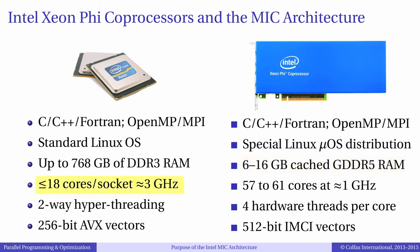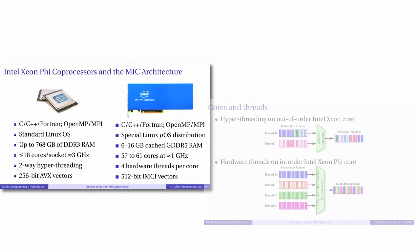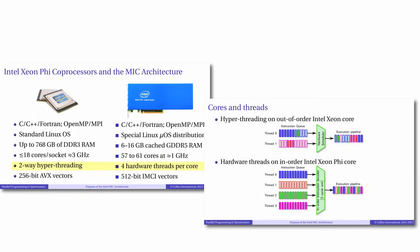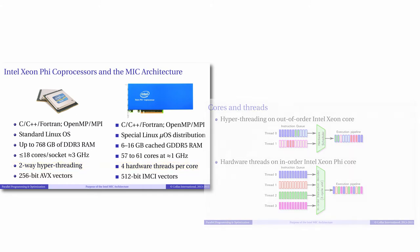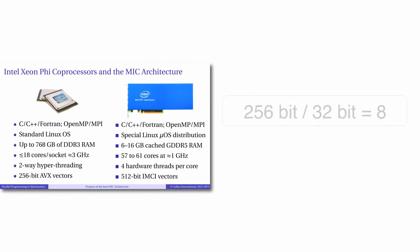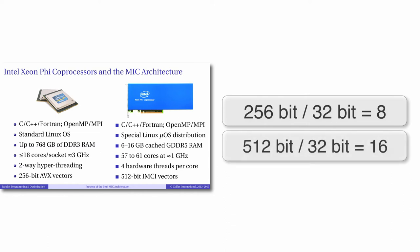Xeon processors have anywhere between 2 and 18 cores per socket, each operating at around 3 GHz, whereas Xeon Phi Co-Processors have between 57 and 61 cores clocked between 1 and 1.2 GHz. Xeon processors have 2-way hyperthreading, while Xeon Phi Co-Processors have 4-way hardware threading. Both Xeon and Xeon Phi can perform vector operations in each core. Vector instructions supported in Xeon CPUs are 8-wide in single precision, and Xeon Phi vectors are 16-wide. We'll discuss vectorization in great detail later in this course.